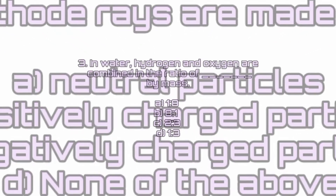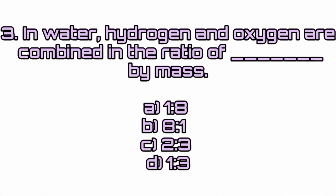In water, hydrogen and oxygen are combined in the ratio of — Answer: Option A, 1 is to 8 — by mass. In water, hydrogen and oxygen are combined in the ratio of 1 is to 8 by mass.